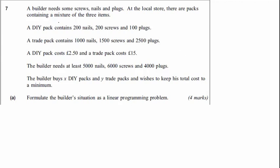So where to start? If we look first for our inequalities — our constraints — the first constraint is 5000 nails. The builder needs at least 5000 nails, so the right-hand side of the inequality is: the amount the builder buys must be greater than or equal to 5000.